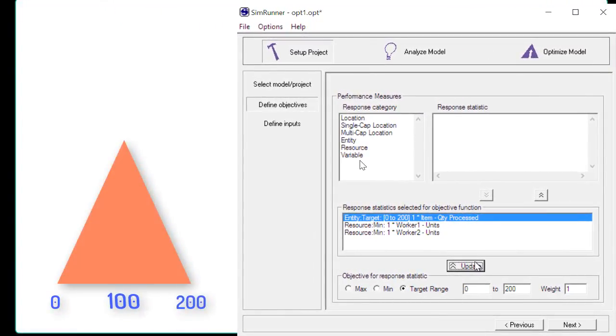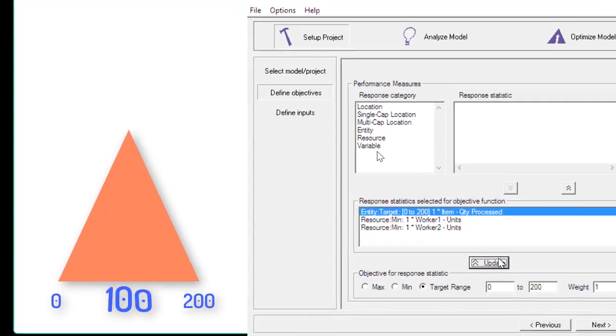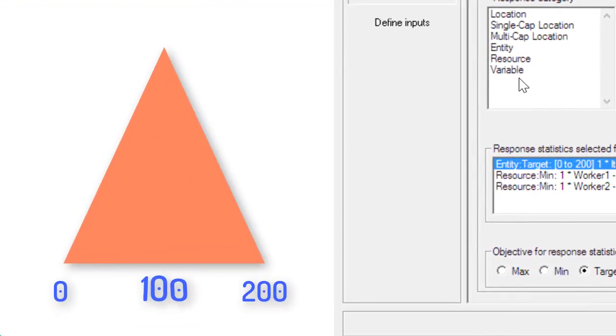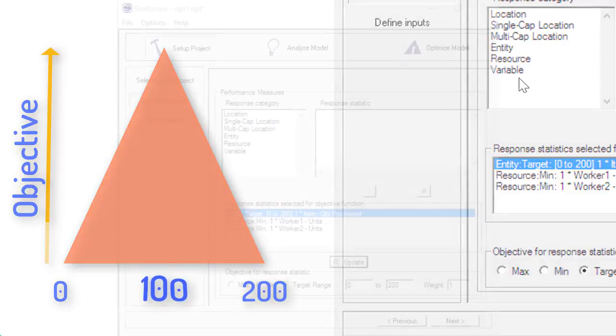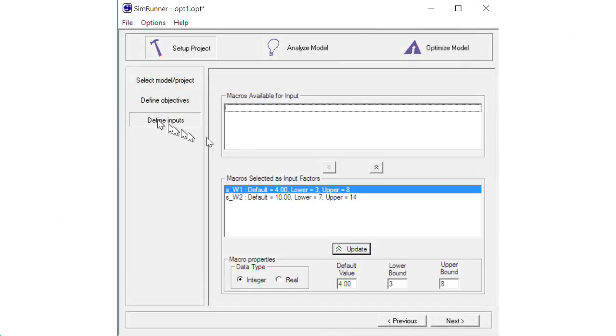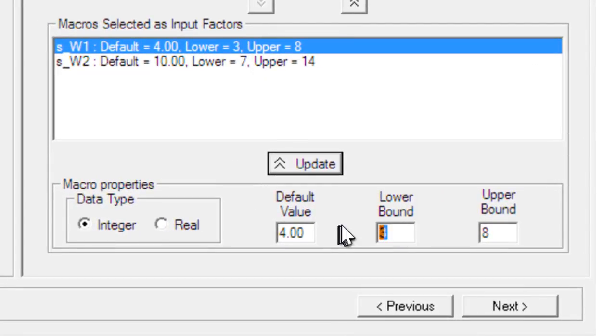The closer the output is to reaching a production of 100, the higher the objective function I will get. To open up the range of worker quantities to allow for lower production requirements, on running the new optimization, you can see how the system zeros in on the new goal.